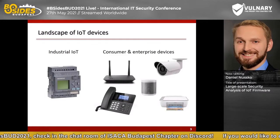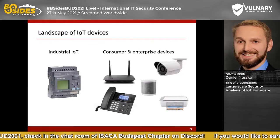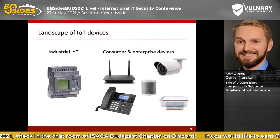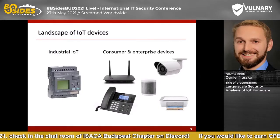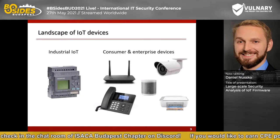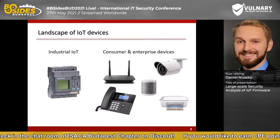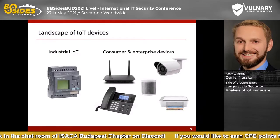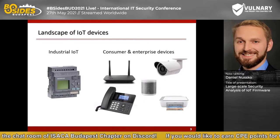We also have a lot of regular internet devices like a router, a surveillance camera, a VoIP phone, and so on. But we also have more and more industrial devices like industrial control systems to control machines, robotics, or solar power plants. All of these devices are connected to the network to monitor and manage them.